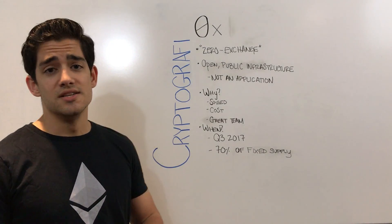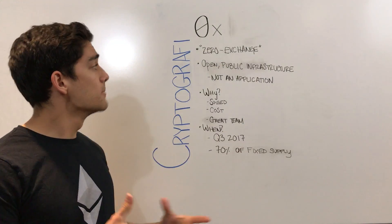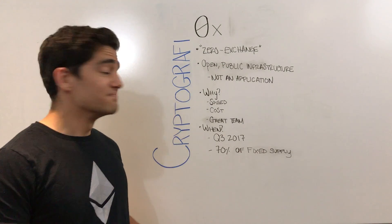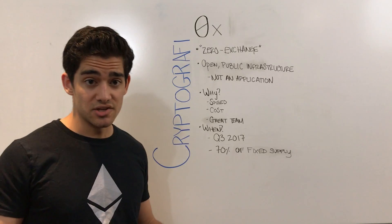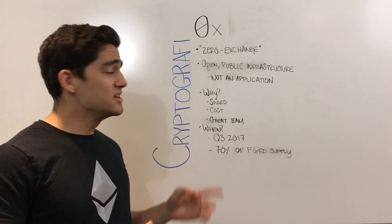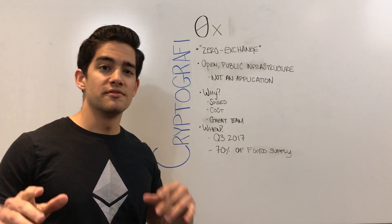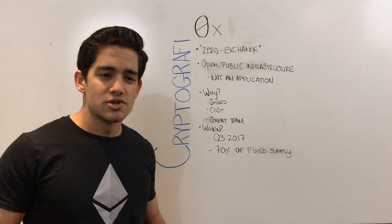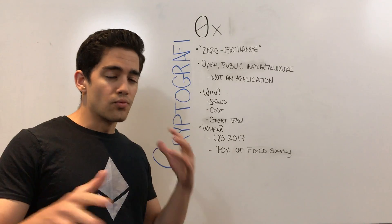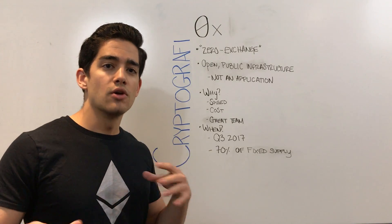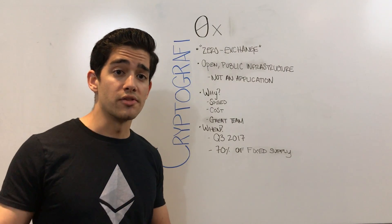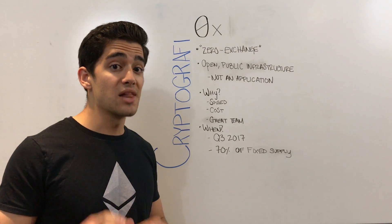0x tries to describe themselves as an open public infrastructure, not an application — very important. And all that means is that there is sort of an architecture, or blueprint, or rules for how you can go about exchanging from one token to another if you use their platform.